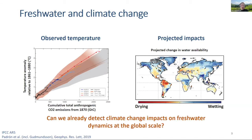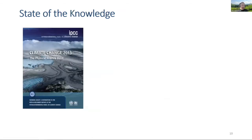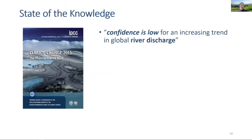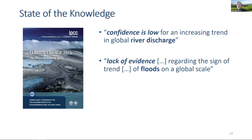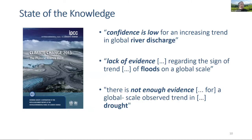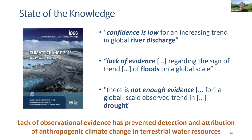If this is projected for the future, the immediate follow-up question is whether we can already detect such climate change impacts on freshwater dynamics at the global scale. If we look at the state of knowledge summarized by the last assessment report of the IPCC, we typically find statements like: confidence is low for an increasing trend in global river discharge; there is a lack of evidence regarding the sign of trends in floods at the global scale; and there is not enough evidence for global scale observed trends in drought. The lack of observational evidence has prevented detection and attribution of anthropogenic climate change in terrestrial water resources.